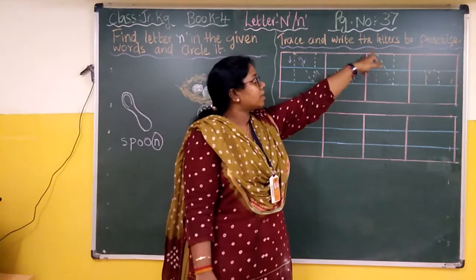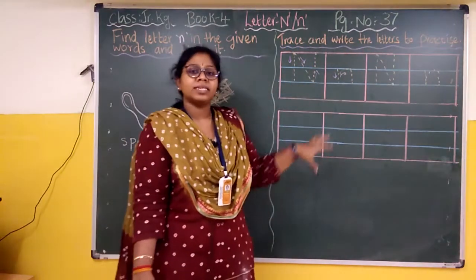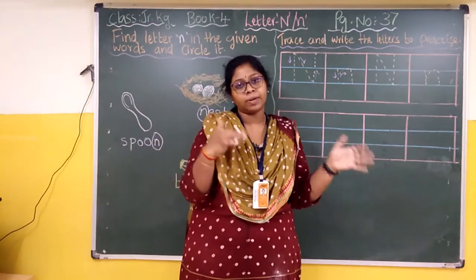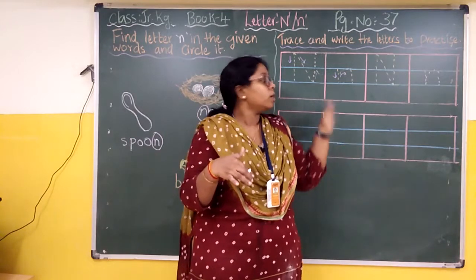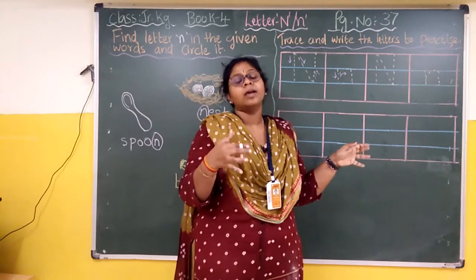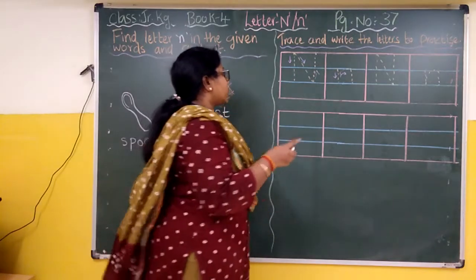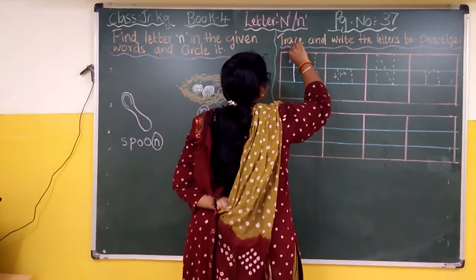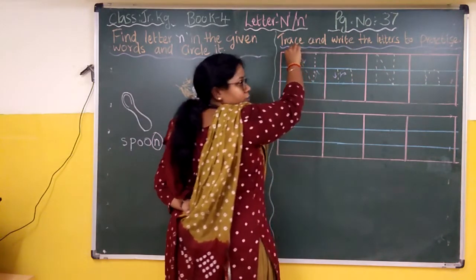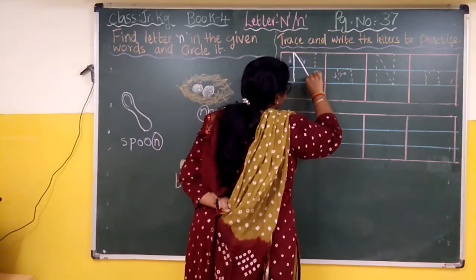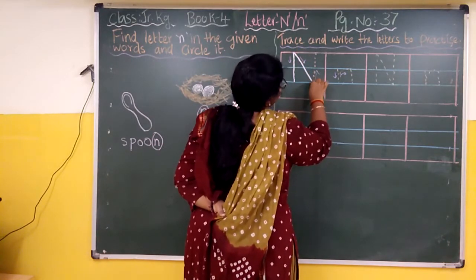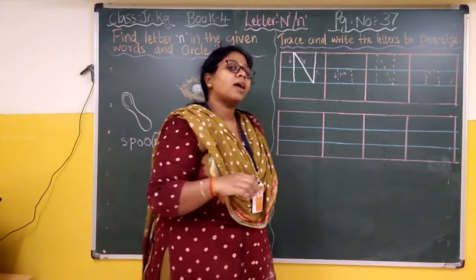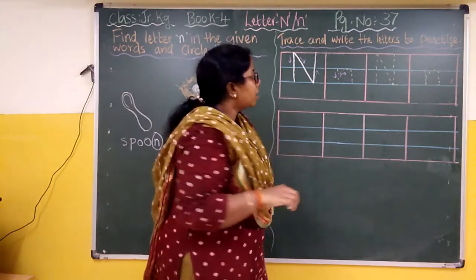Now coming to the next part — trace and write the letters for practice. You already know how to trace and write letter N, both capital and small letter. So here in this space we practice. For capital N: from the red line to the third blue line, make a standing line, then a slanting line down to the third blue line, then another standing line up to the red line. Thus we get capital letter N.